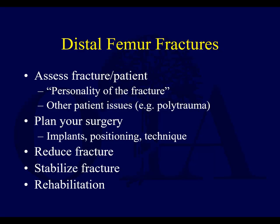In this first portion of the lecture, we're going to talk mostly about assessment and pre-op planning. You have to assess the fracture and the patient, determine the personality of the fracture — one of the AO terms used commonly — figure out other patient issues like whether it's a polytrauma patient, plan your surgery, consider what implants you might need, how you're going to position the patient, technique, and other injuries that have to be treated at the same time. You need to think about how you're going to reduce and stabilize your fracture, and then what you're going to do afterwards with rehabilitation.